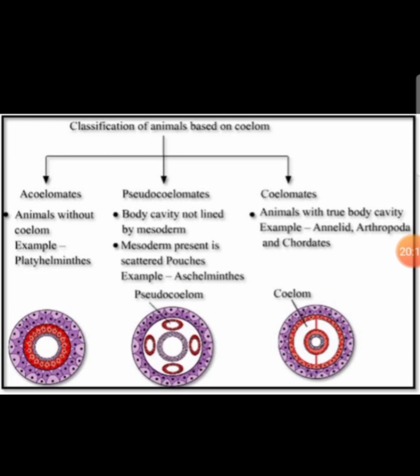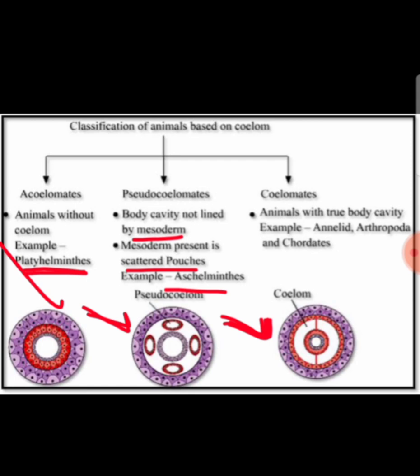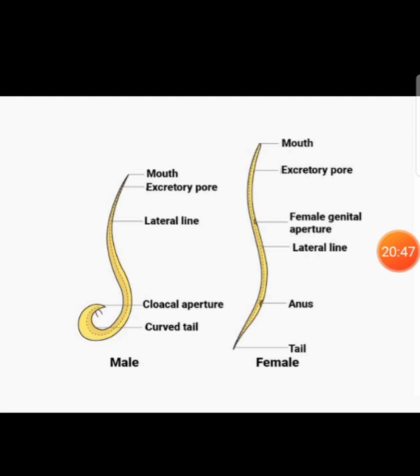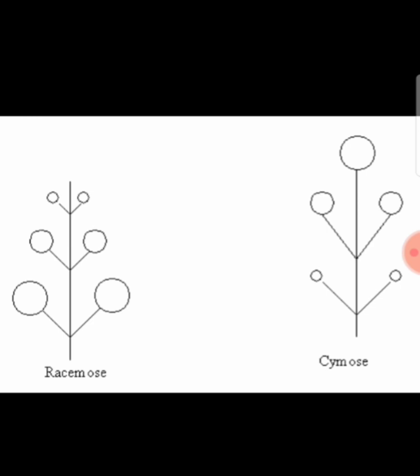Here you can find the classification of animals based on the coelom. Acoelomates have no coelom — this is found in Platyhelminthes. In pseudocoelomates, the body cavity is not lined by mesoderm; mesoderm is present but in scattered pouches — this is found in Aschelminthes. Coelomates have a true body cavity — found in Annelida, Arthropoda, and Chordates. Here is also a picture of the roundworm Ascaris — the smaller, coiled one is male and the larger one is female.